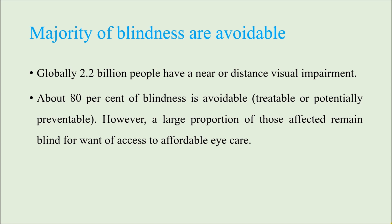One of the most commonly asked questions from this topic is: why is the majority of blindness preventable or avoidable? Globally, 2.2 billion people have a near or distance vision impairment. About 80 percent of blindness is avoidable — either treatable or potentially preventable. However, a large proportion of those affected remain blind for want of access to affordable eye care, and because of that they cannot prevent or treat conditions which ultimately lead to blindness.